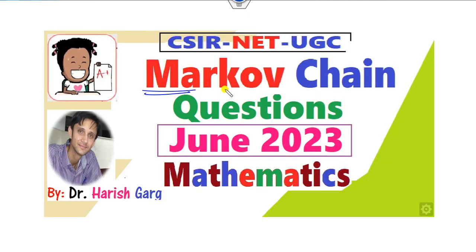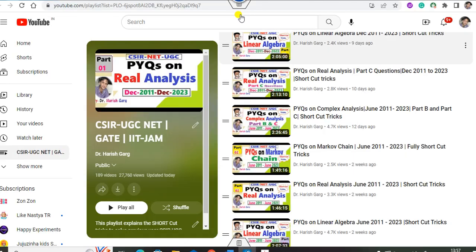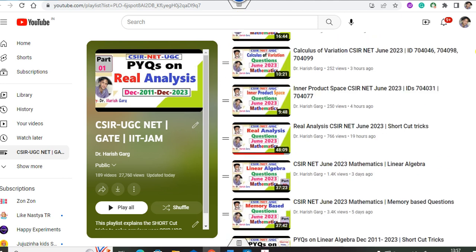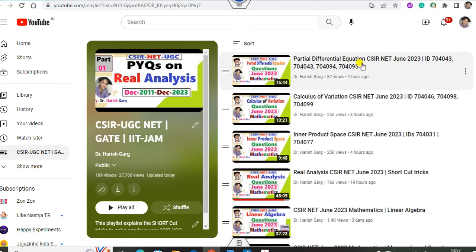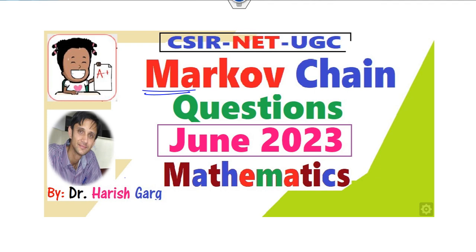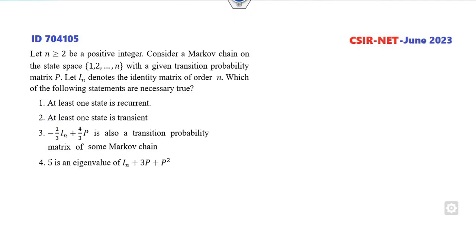Since today's topic is on Markov chain, we already discussed in my playlist PY questions of the Markov chain from 2011 to 2023. Today's question from June 2023 is the combination of all those questions. I already explained the June 2023 partial differential calculus of variation, real analysis, inner product space, linear algebra in my playlist CSIR UGC NET. So let's start with this video.